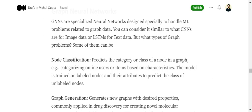I'm assuming you have baseline knowledge of what graphs are: nodes, vertices, edges. If not, you can watch my previous video, Graph Analytics for Beginners. That will give you an idea of the baselines. Node classification is one problem GNNs can solve: predicting the category or class of a node in a graph, like categorizing online users or items based on characteristics.